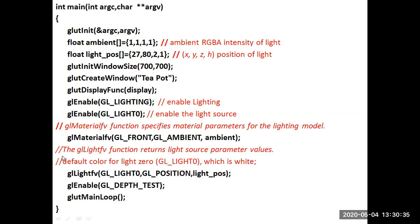The gl_lightfv function sets a light source parameter. The default color for Light Zero is white. GL_lightfv with a float vector indicates the type of light source — GL_LIGHT0 — and GL_POSITION specifies the XYZ position. We also need to enable depth testing using gl_enable with the constant GL_DEPTH_TEST. Since a double buffer is used, at the end of the main function, glut_main_loop is called to start event processing.